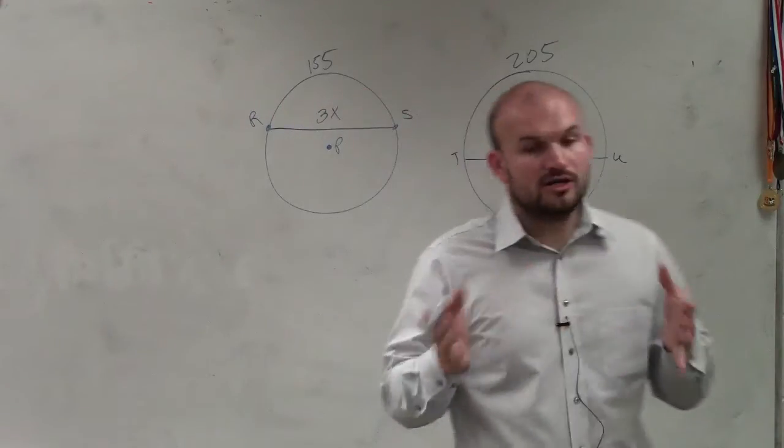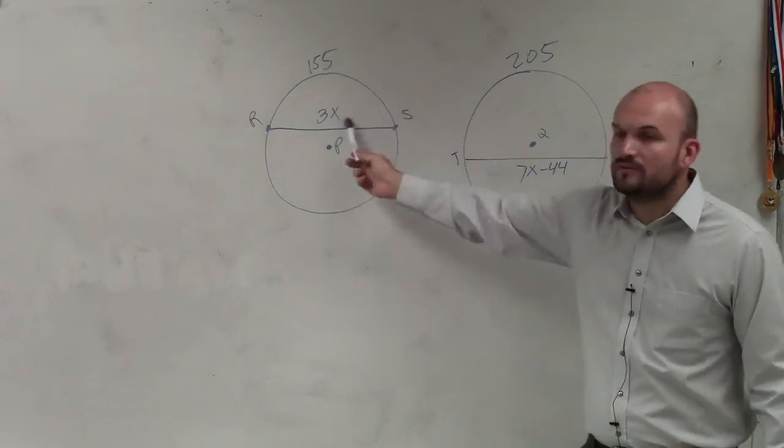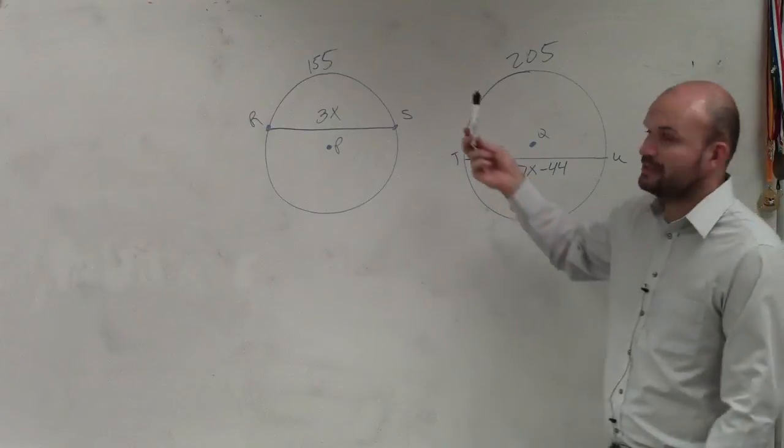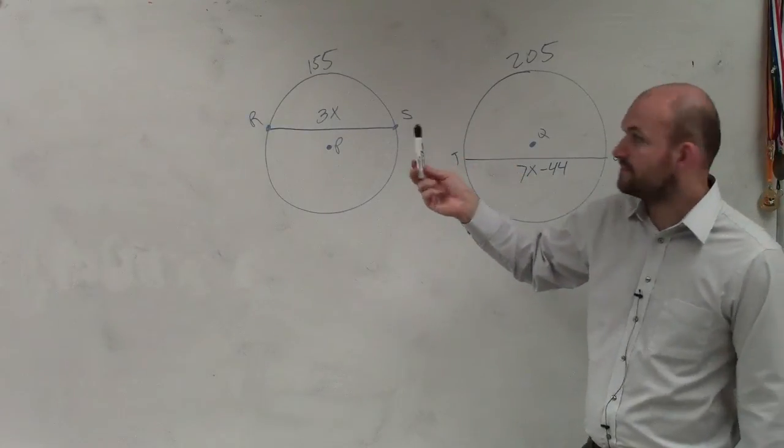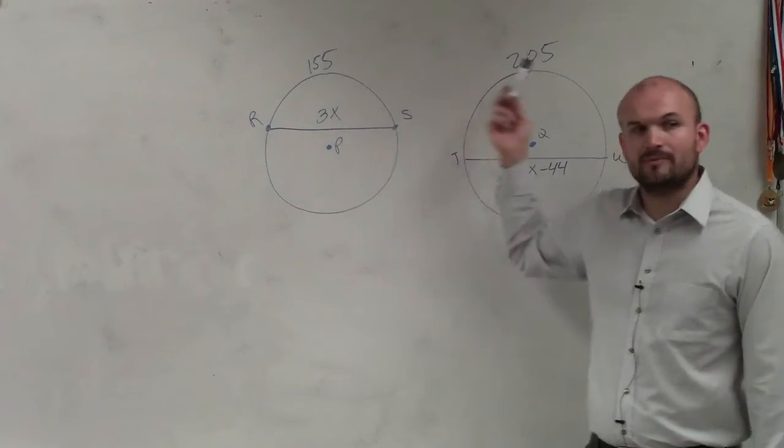Or if we have arcs that are equal in measurement, then the chords are equal in measurement. We look right here, we don't know the value of x, so we can't confirm that these two chords are equal in measurement. Now, the other thing is these are not equal in measurement as well.